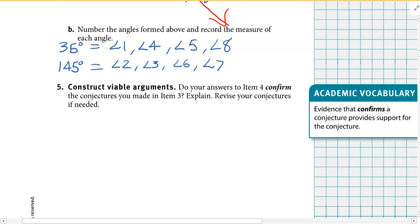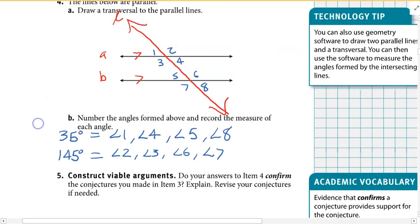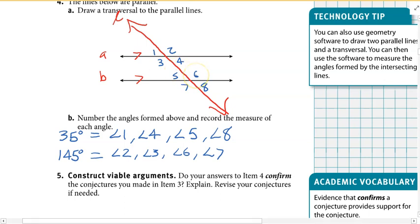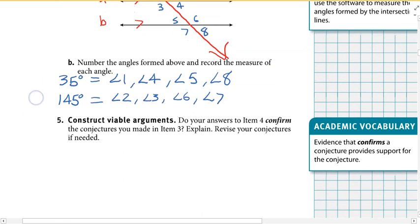Do the answers confirm the conjectures? Yes. All corresponding angles are congruent — one and five are both 35 degrees, two and six are both 145 degrees. Alternate interior angles: three and six are both 145, four and five are both congruent to each other. So alternate interior angles are congruent. All our conjectures are confirmed — this is just more evidence.